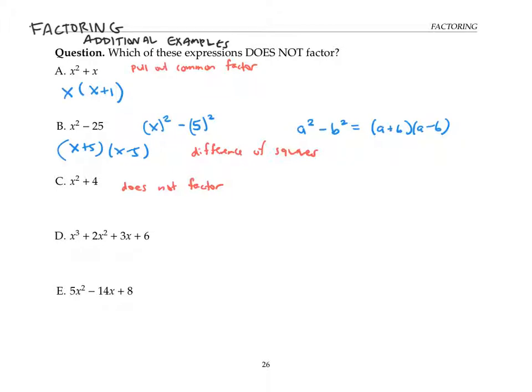Just for completeness, let's look at the next two. This next one does factor by grouping. When we factor by grouping, we pull the biggest common factor out of the first two terms, that would be an x squared, that becomes x squared times x plus two.